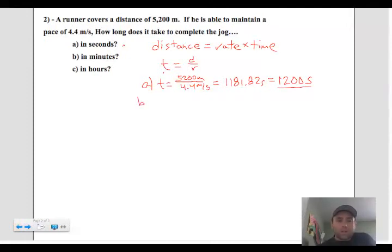Part B asks for that result in minutes. So what we can do is take this original value, 1181.82 seconds, and convert that to minutes. And if you do that, you get a value of 1182 seconds times our dimensional analysis conversion, which is one minute per 60 seconds.